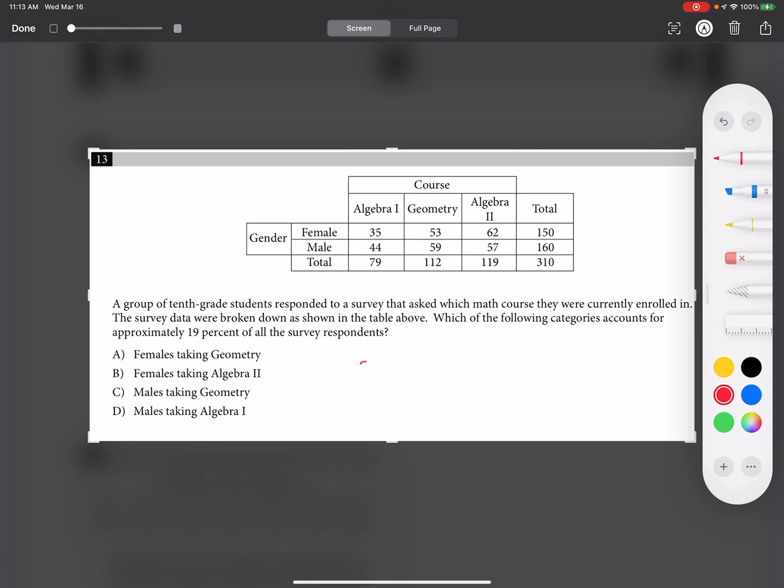Okay, I have 310 in total. I'll take 19% of this. You can use the calculator here, but I will not use it. I will do 20%. 20% of this is 62, so it should be likely less than 62.